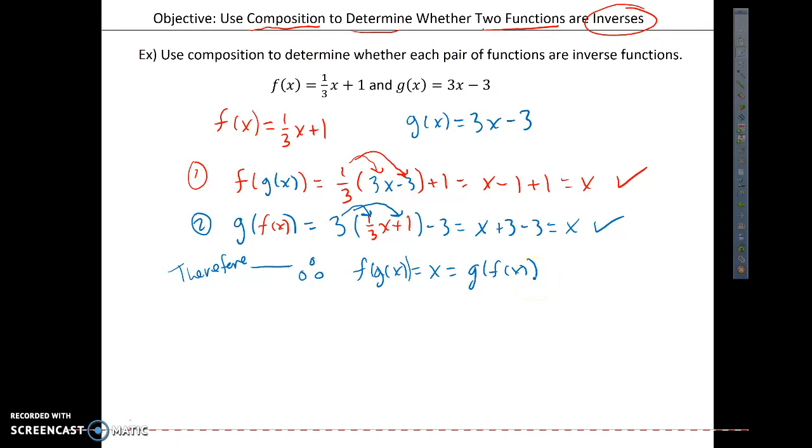Okay, good. That's good. And what that means is, therefore, f of x and g of x are inverse functions. Okay. QED. Put a little box. This box means we have shown what we have wanted to show, and therefore, we are done. We have used composition to determine whether each pair of functions are inverses.